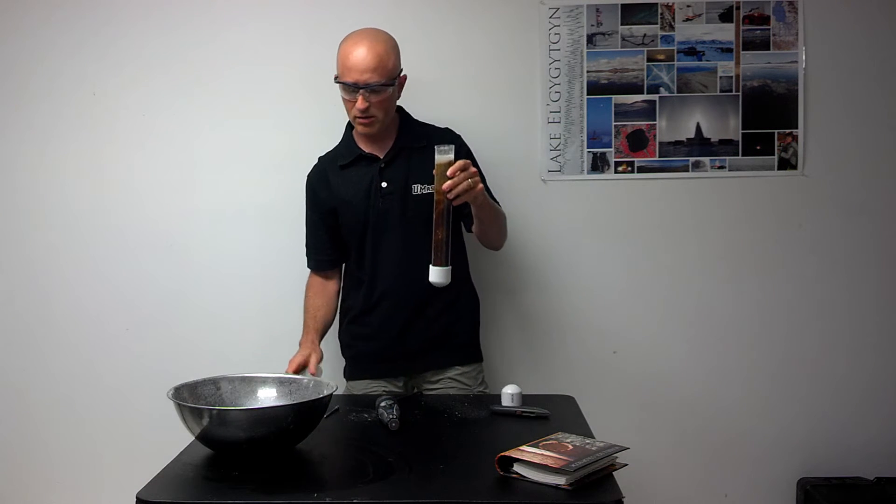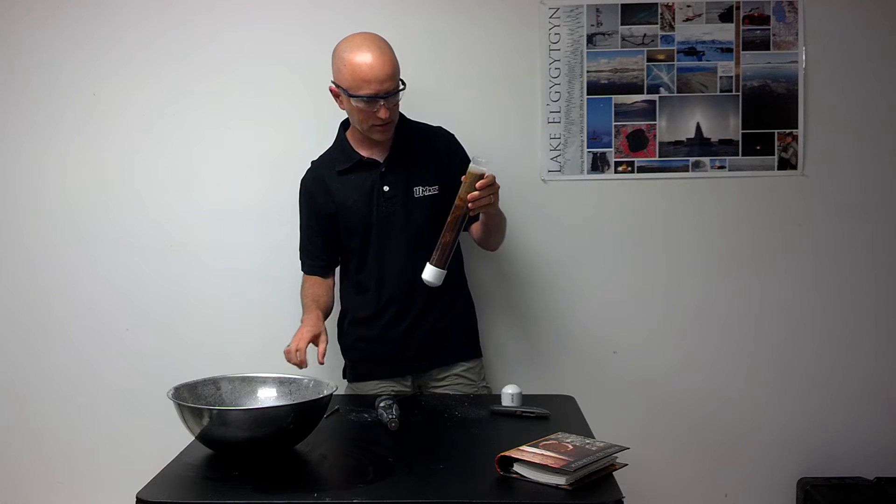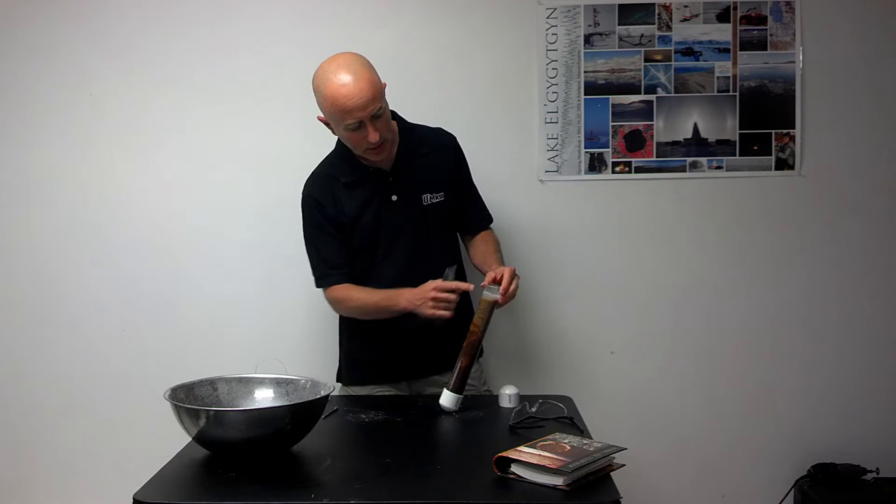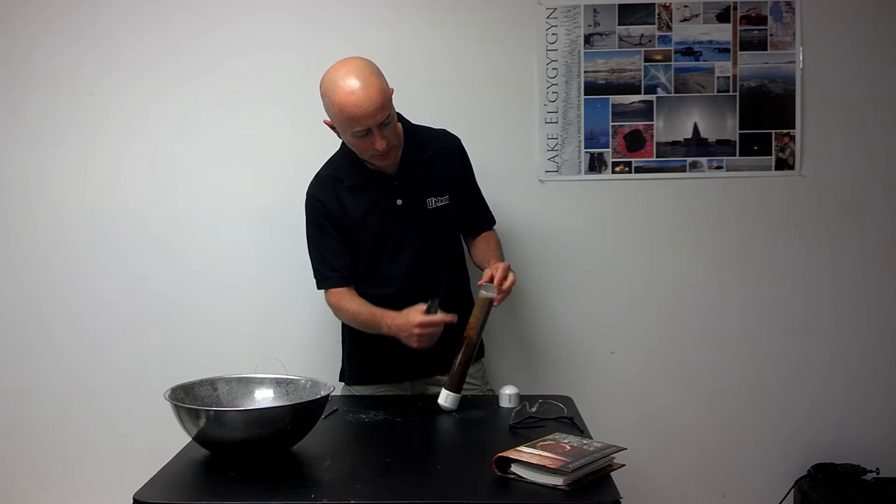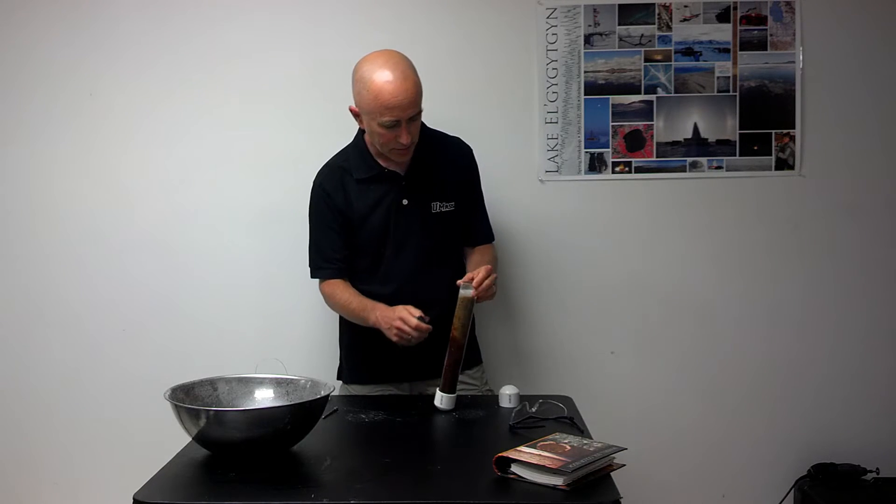With the excess plastic removed, we have a much more manageable length core segment. Next, we'll slice down through both sides of the plastic of the core liner.